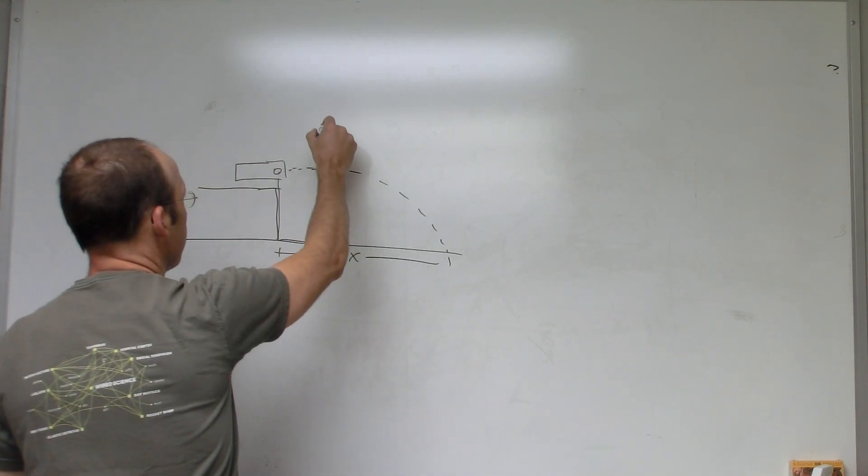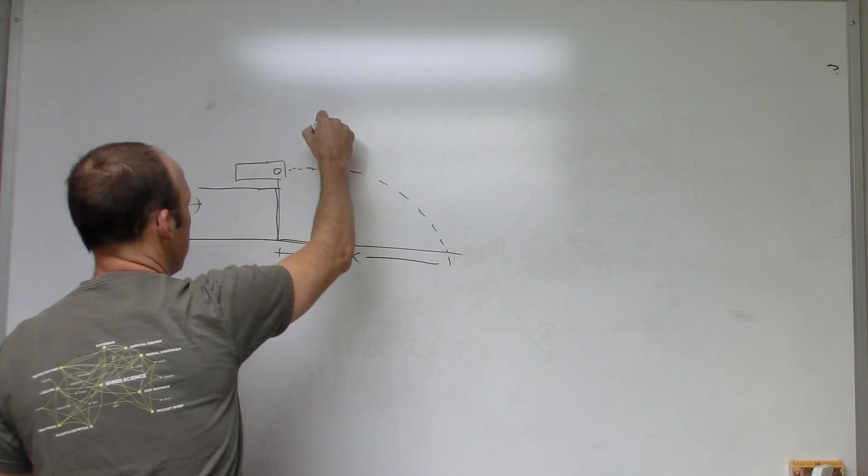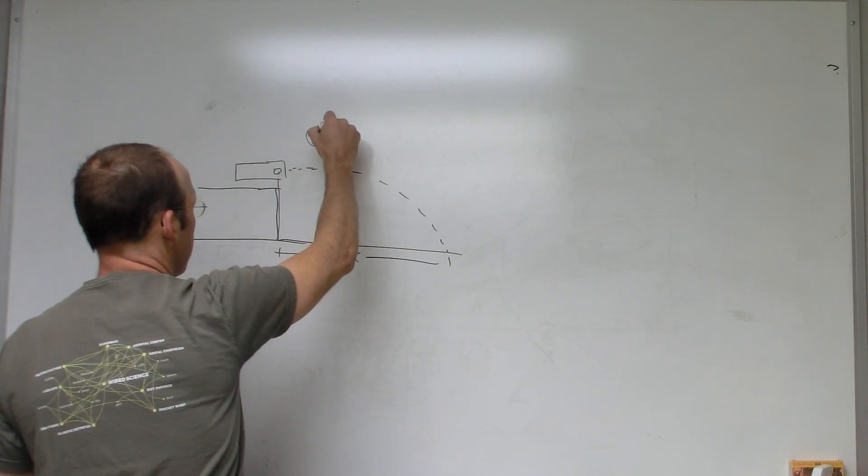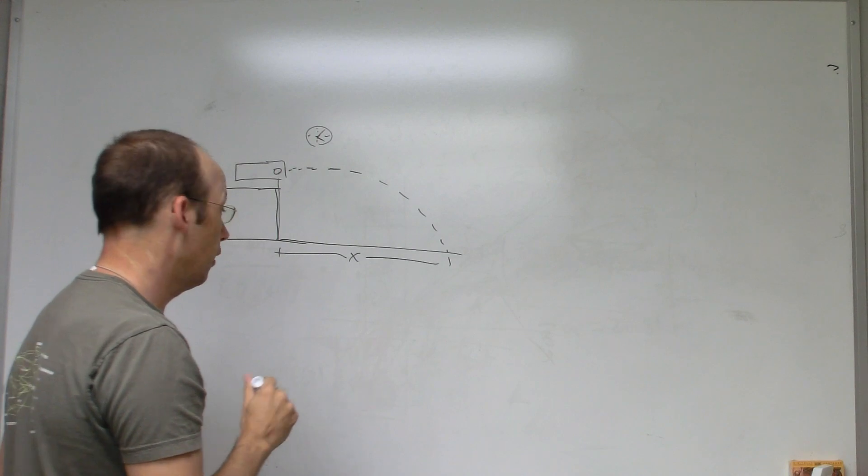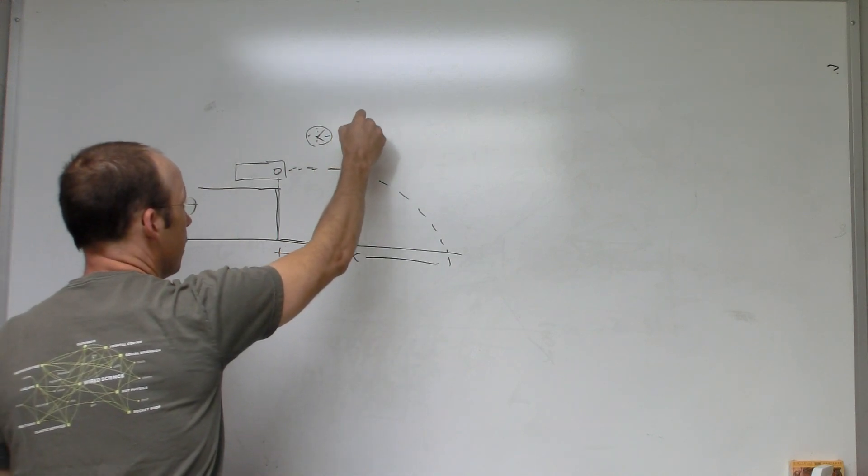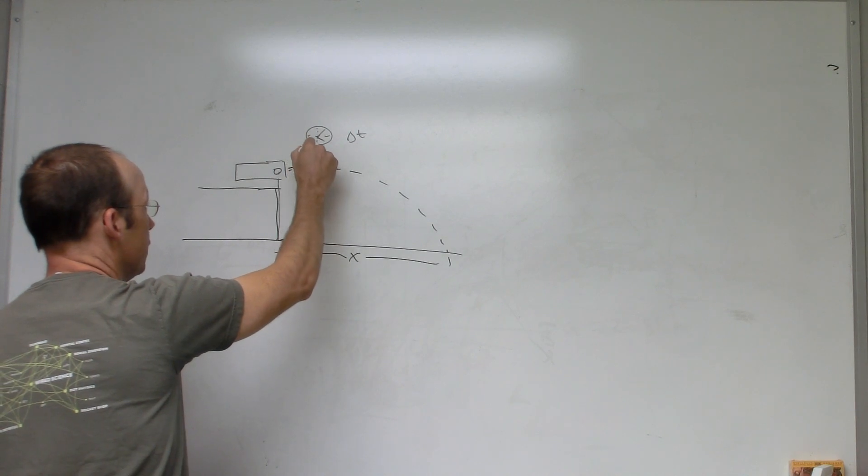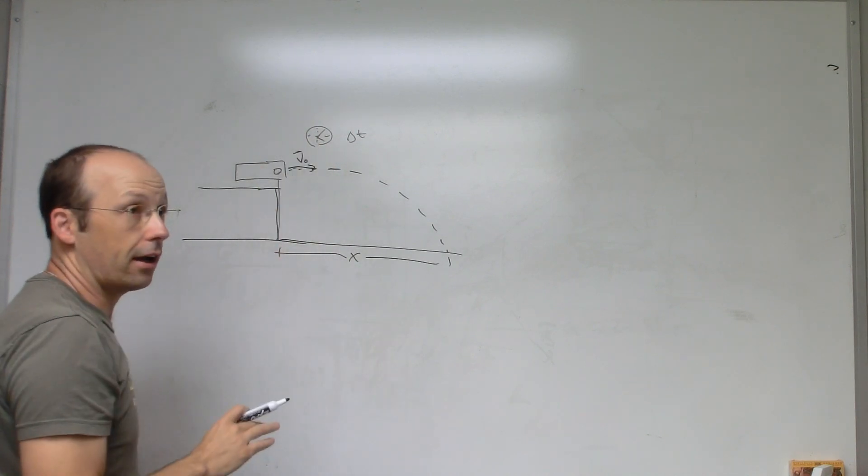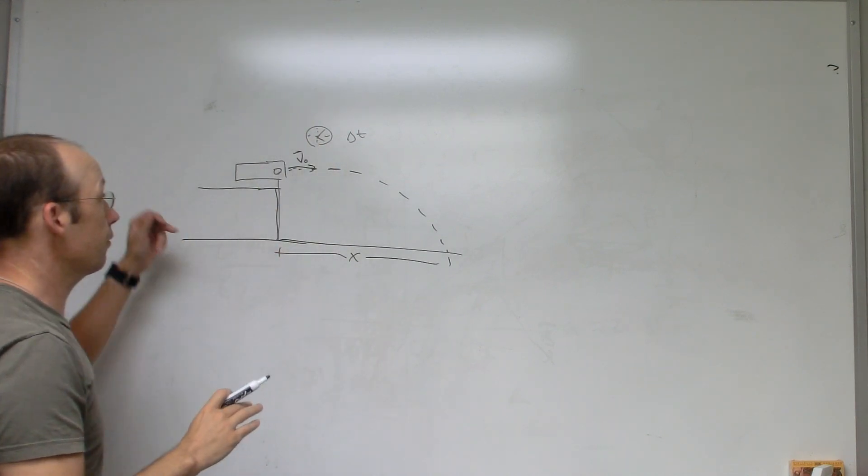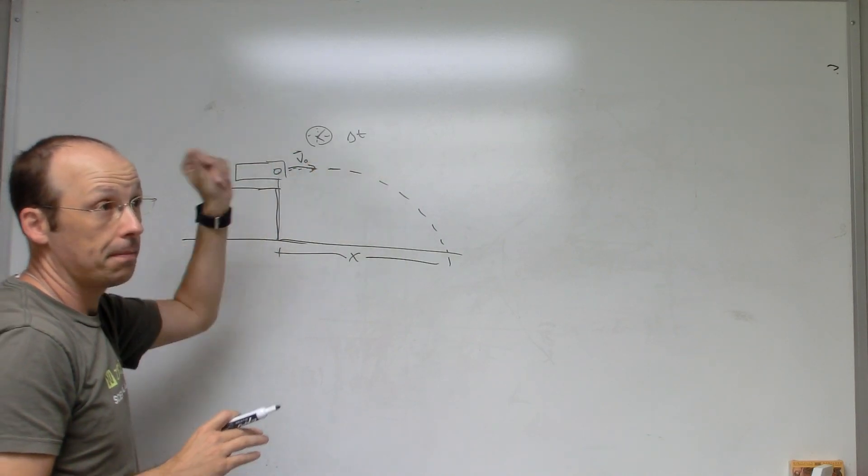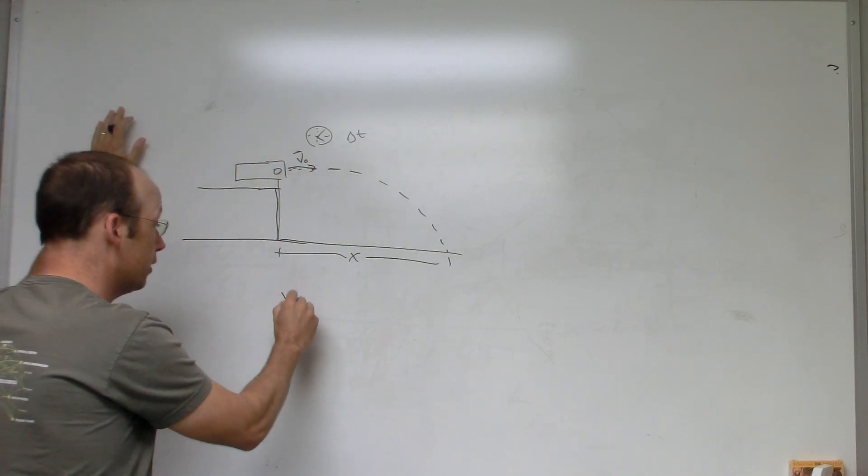Then you use a stopwatch to time it. So you get two things: you get that and you get Delta T. This is the ball, this is the launch velocity v0. It's only in the x-direction. Since there's no forces in the x-direction after it launches, it travels with a constant velocity.